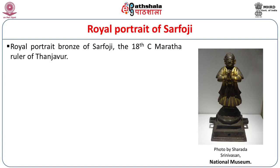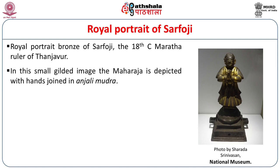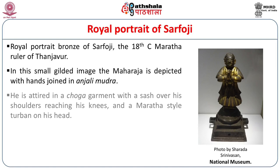As another interesting example of a royal portrait, there is a small portrait of Sarfoji, the 18th-century Maratha ruler of Tanjavur. In this small gilded image, the Maharaja is depicted with his hands joined in the devotional Anjali Mudra, attired in a choga garment with a sash over his shoulders reaching his knees and a Maratha-style turban on his head. Although bronzes of the later Nayaka and Maratha period of the 18th century largely follow the broader conventions of South Indian bronze casting, the Thalamana proportions, and iconography, this one is more naturalistic — it actually tries to depict the Maratha king as he would have been with his particular attire and turban, examples of which one would find perhaps more in miniature paintings.